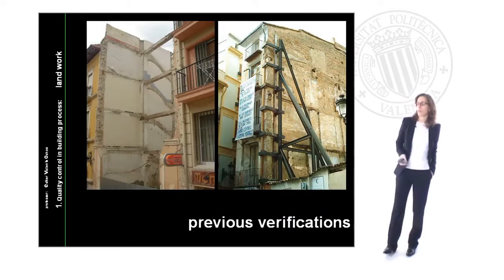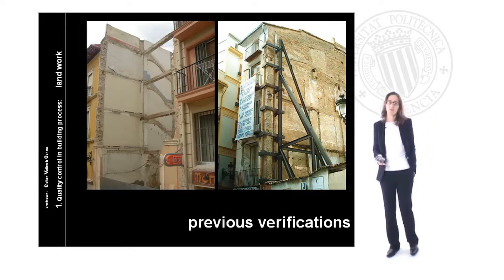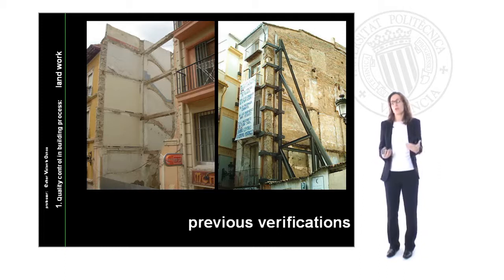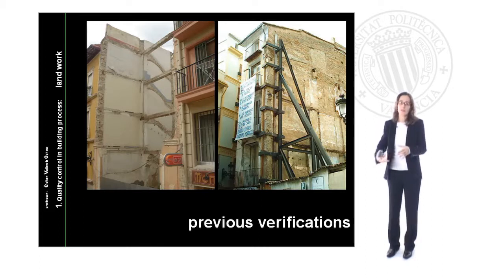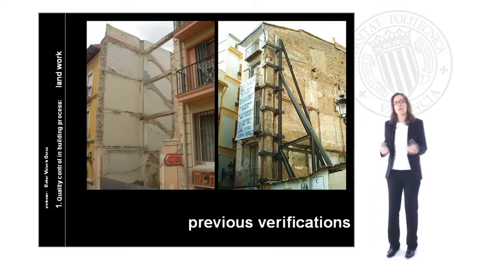In the case where we are in an urban area, the verifications prior to the land work must include a supervision and revision of the neighboring buildings. When you make a demolition of a building, you need to support and reinforce the neighboring buildings to ensure there is no danger for them. You are going to remove a building and you need to provide the same structural support that the previous building was giving to the neighbors.